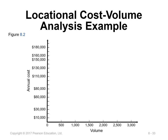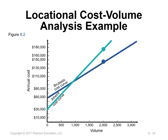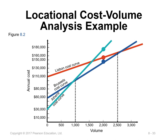Summary of the crossover analysis: fewer than 1,000 units — choose Athens; between 1,000 and 2,500 units — choose Brussels; more than 2,500 units — choose Lisbon. This can also be shown graphically by plotting the total cost lines for all three locations, with crossover points at 1,000 and 2,500 units identifying the lowest-cost region for each location. At exactly 2,500 units, the company can choose either Brussels or Lisbon as costs are equal.